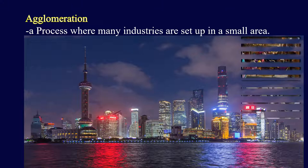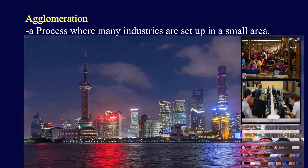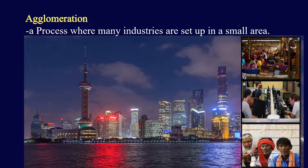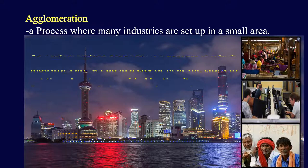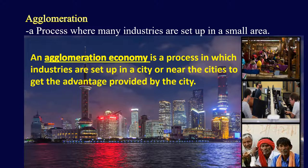We know that cities provide many facilities such as markets, banking, insurance, transport, and labor. And that is the reason that sometimes many industries are set up in the cities or near the cities. Thus, an agglomeration economy is a process in which industries are set up in a city or near the cities to get the advantage provided by the cities.